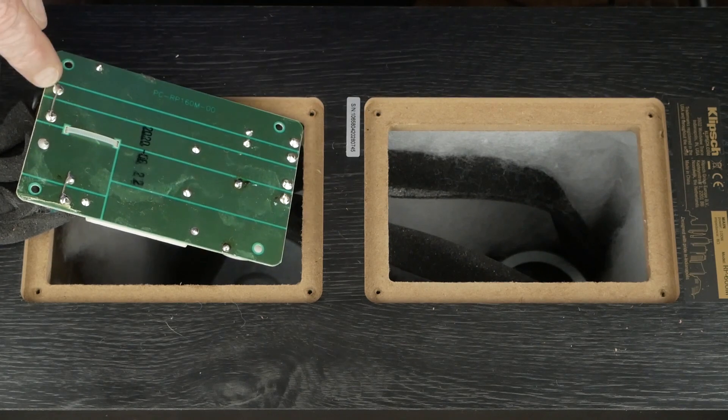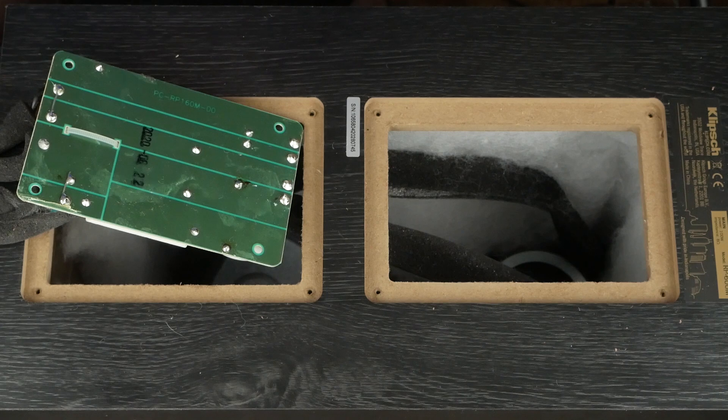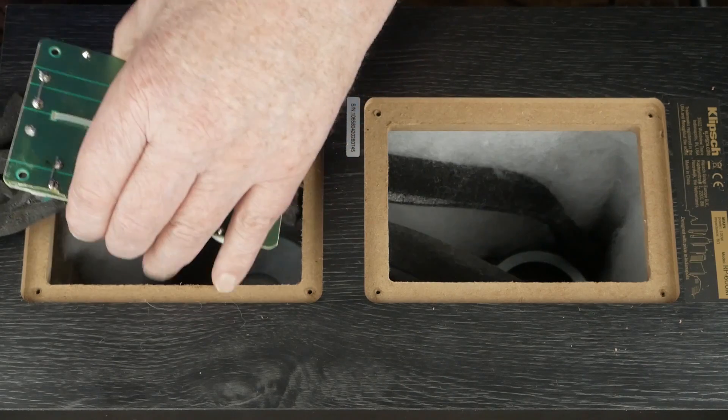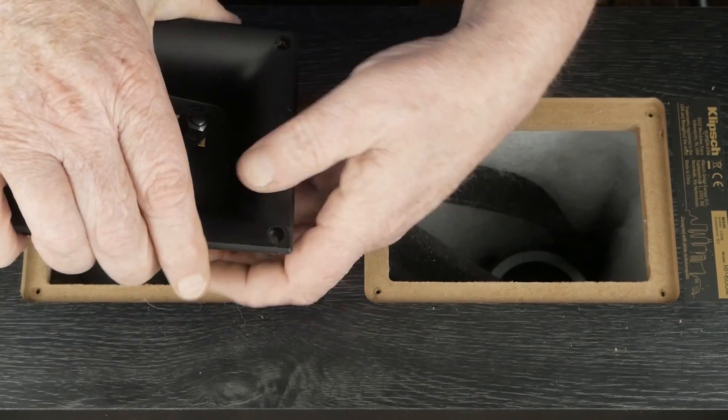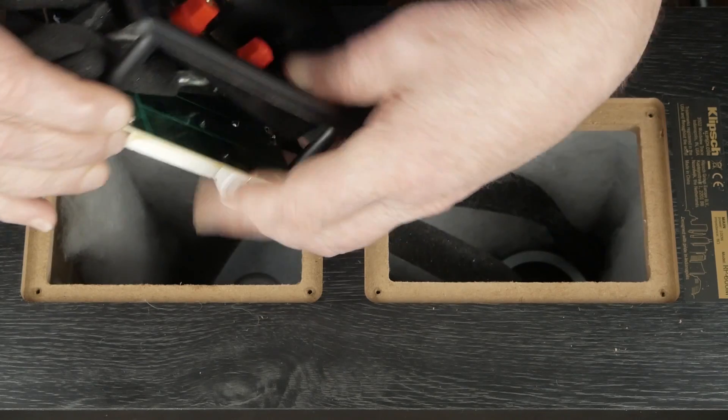So you just jumper these two, jumper those two, then you don't have to worry about those bi-amp strips on the back of the speaker terminal and you can just hook any of them up. Okay, so now we want to put our screws back in place and we're almost done.